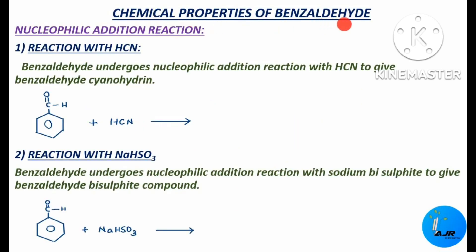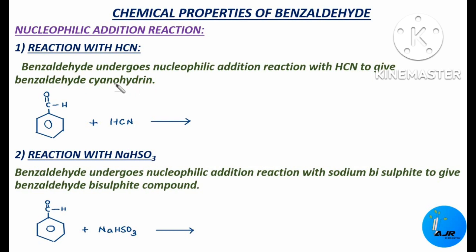Under the chemical properties of benzaldehyde, first is the nucleophilic addition reaction. Under nucleophilic addition reaction, we have the reaction with HCN. Benzaldehyde undergoes nucleophilic addition reaction with HCN to give benzaldehyde cyanohydrin first, and this benzaldehyde cyanohydrin undergoes hydrolysis and it produces mandelic acid.